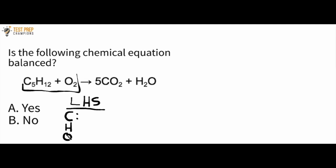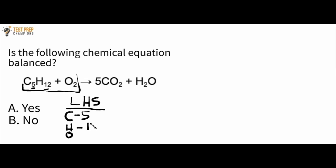All we're going to do is count these up and see if the number on the left-hand side matches the number on the right-hand side. Looking at the carbons, this subscript tells us we've got five C's. For the H's, right beside them we see 12 — so we've got 12 H's. And for the O's, that subscript tells us we have two O's on the left-hand side.